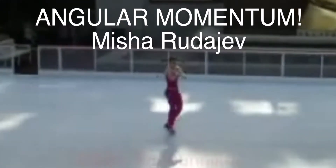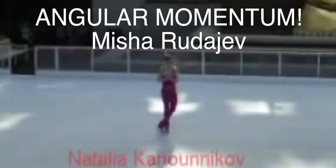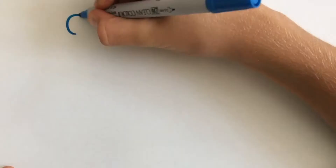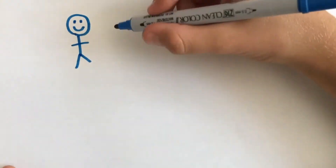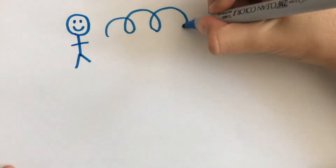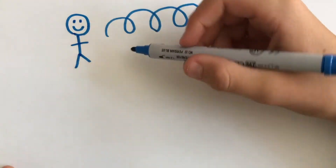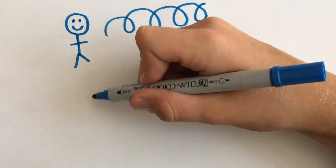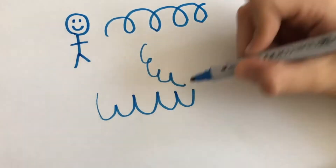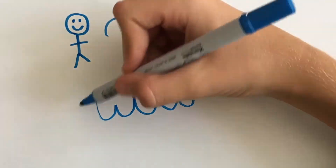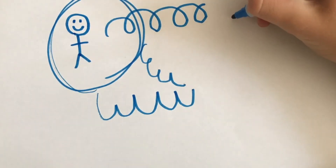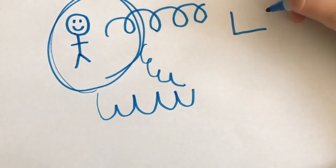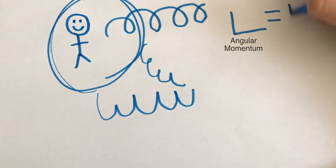Have you ever wondered how a figure skater can change their speed? When a person or object flips, twirls, spins, pirouettes, or rotates, it is moving. However in reality, it doesn't go anywhere. That's when the concept of angular momentum comes into play.